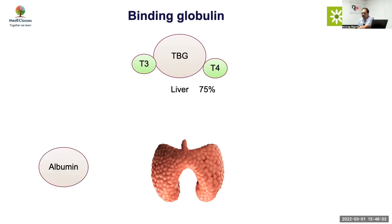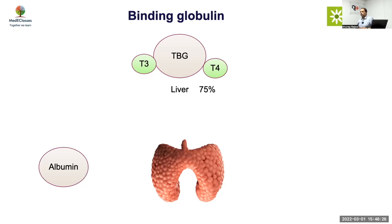Then you have albumin. Albumin is about 200 times more in concentration as compared to TBG, but it has a lower affinity. When we talk about affinity versus capacity - albumin can bind much more because it is 200 times more concentrated, it can carry more load, but the affinity is less. TBG is like a strong person holding on to whatever weight it can - it will not let go.